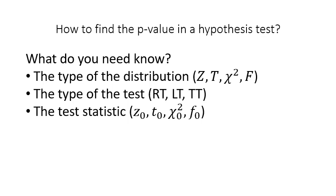Next, you will need to know the type of the test, such as whether it is a right-tail, left-tail, or two-tail procedure. And finally, you have to know the value of the test statistic for which you will be computing the p-value. The test statistics are usually labeled using the lower case of the name of the distribution and the subscript 0.